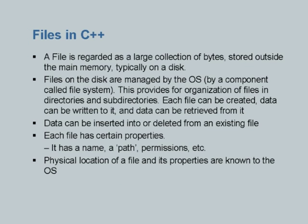Each file has properties: a name, a path, and a set of permissions. The physical location of a file and its properties are known to the operating system. Files are external to our program.